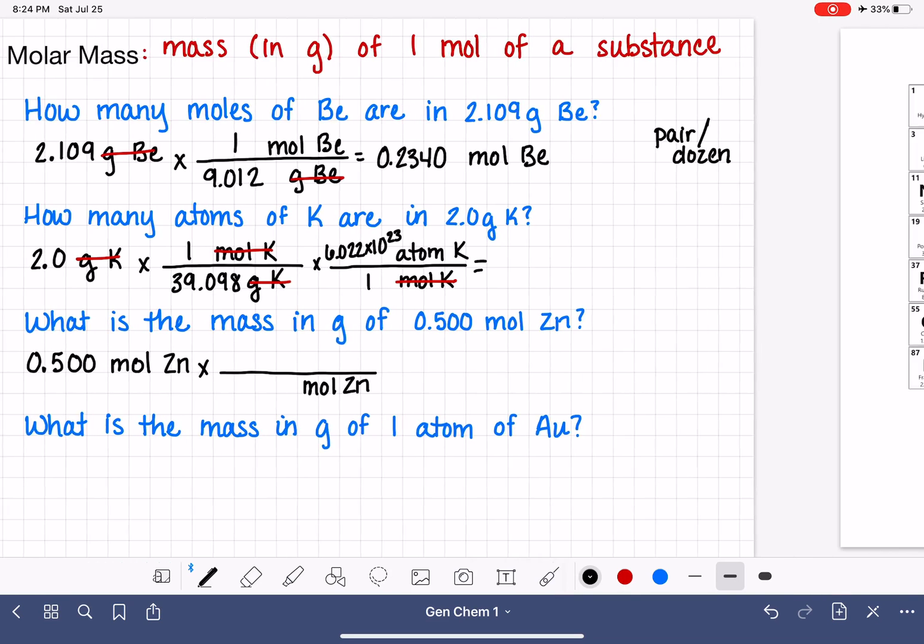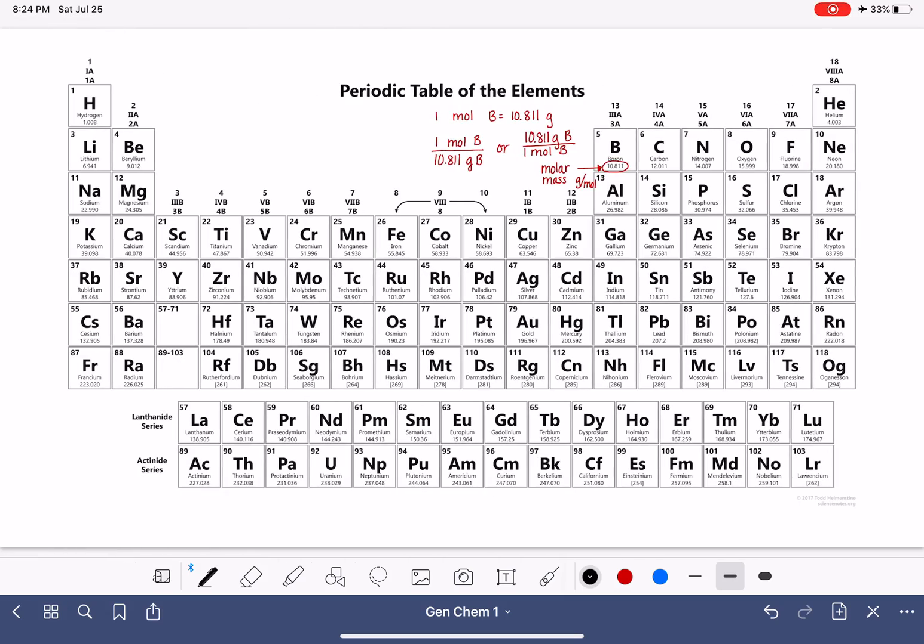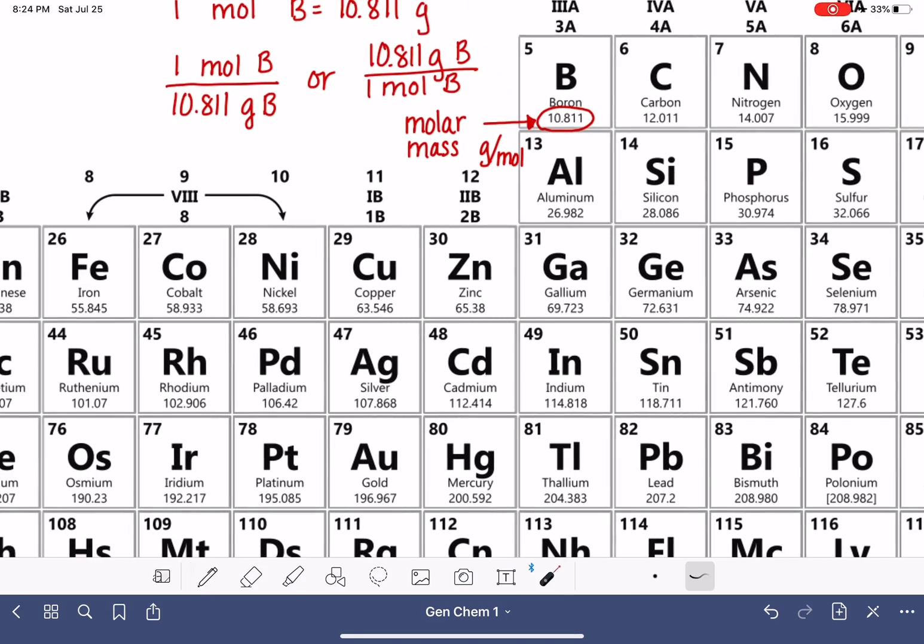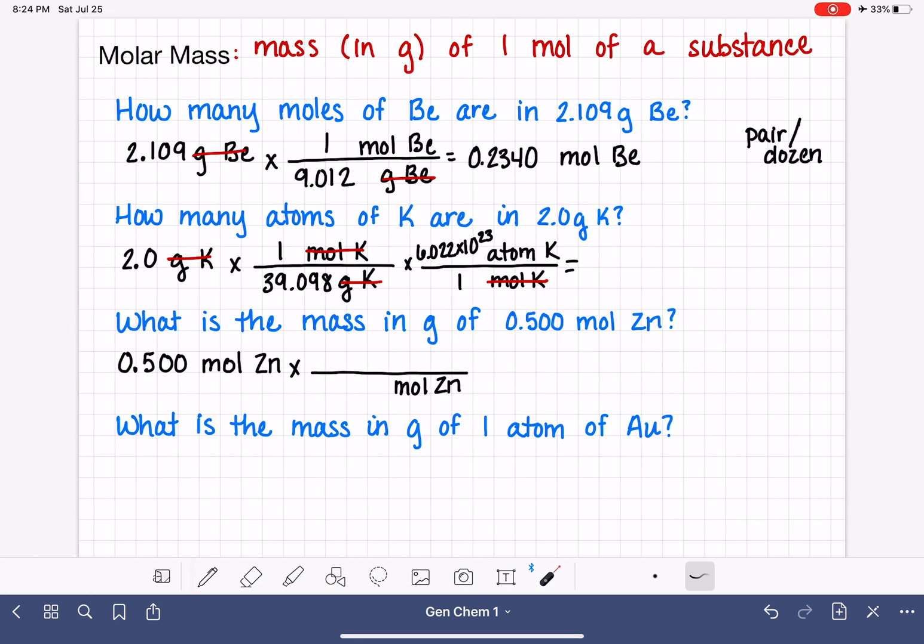Let's go find zinc on the periodic table. Zinc is right here. And we can see that it is 65.38 grams per mole. One mole is 65.38 grams. It looks like that's the only step that we need to take to convert from moles to grams. So this problem is all set up and ready to enter in the calculator.